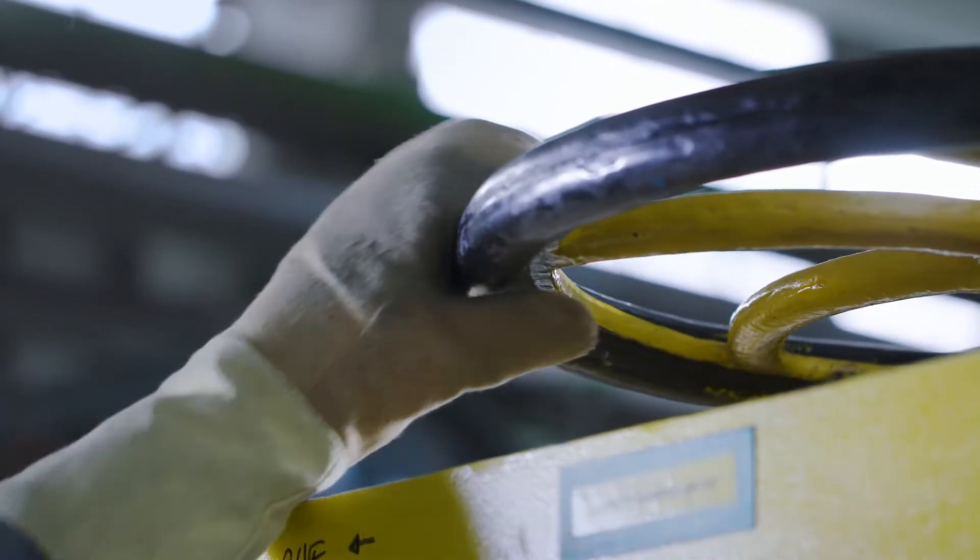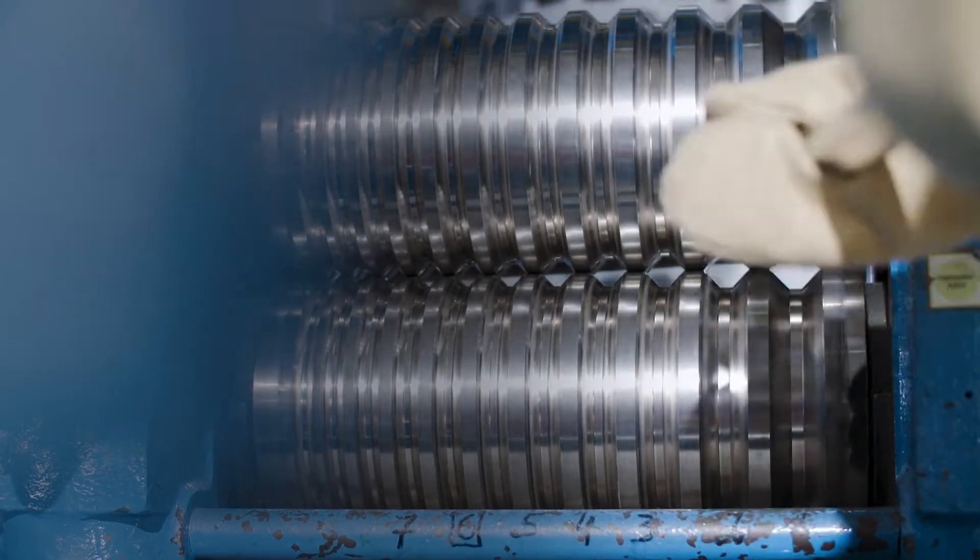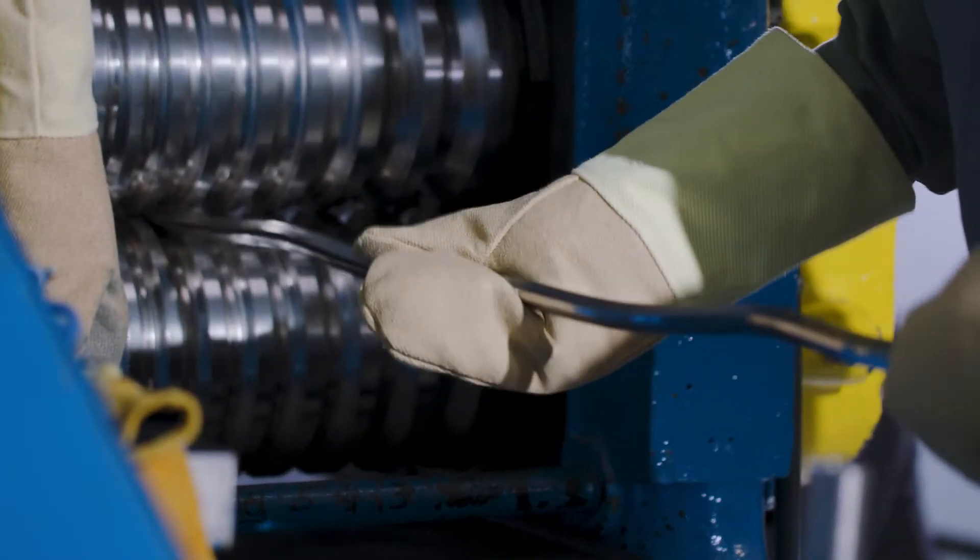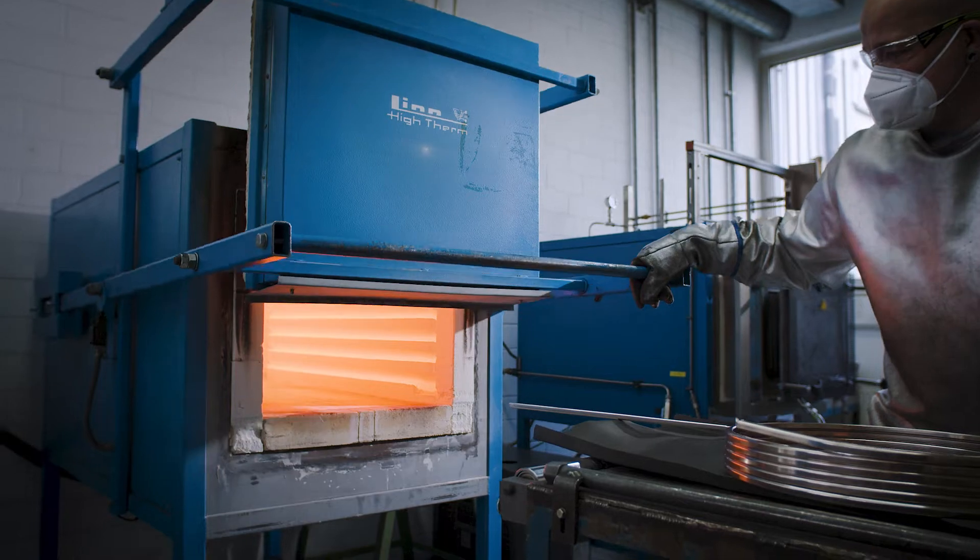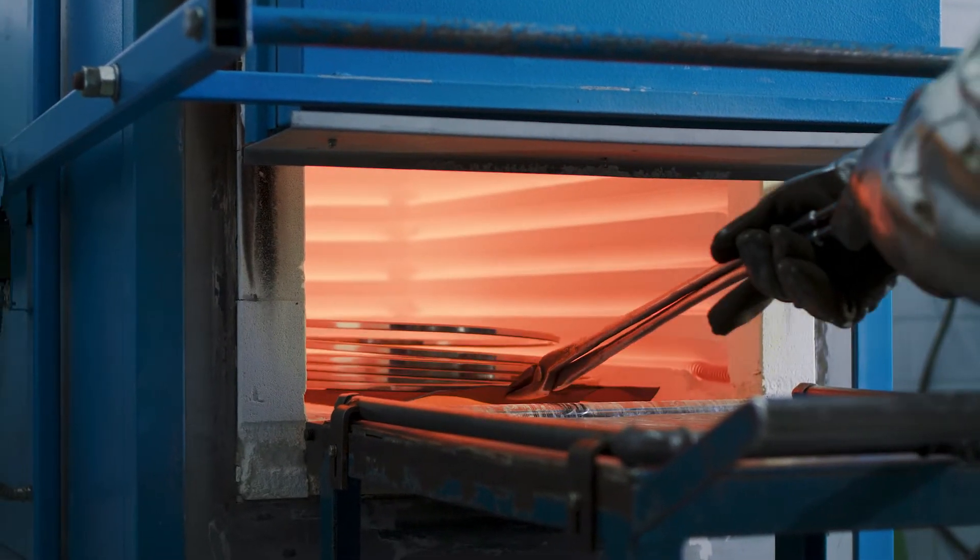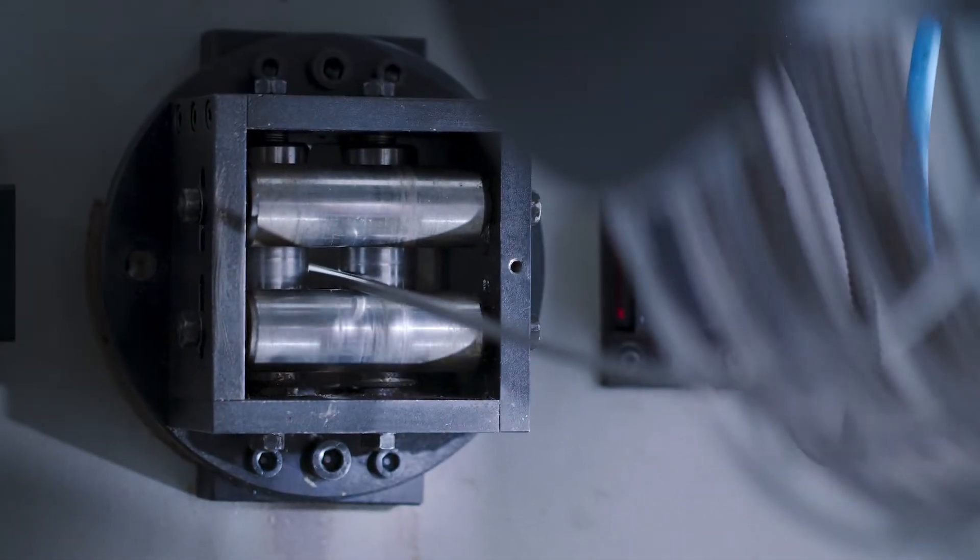The ingot is rolled down in several consecutive steps to form a wire of 1.5 mm. This process is very critical to the quality of the final wire. Several intermediate annealing steps allow for recrystallization of the grain structure of the material, a requirement for further rolling and wire drawing.